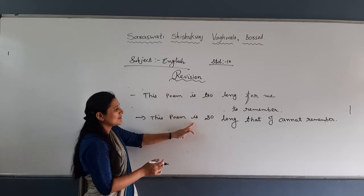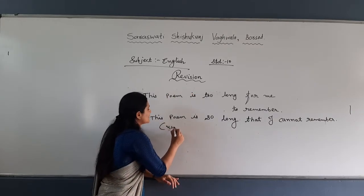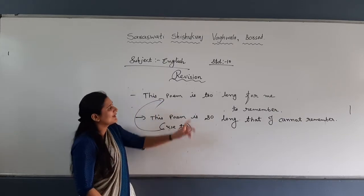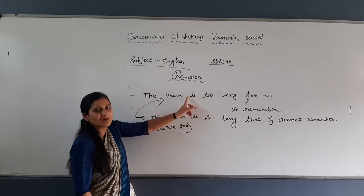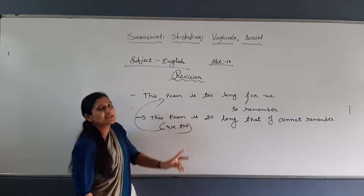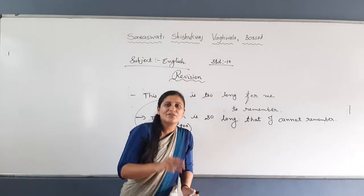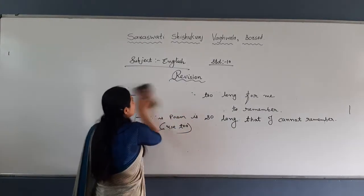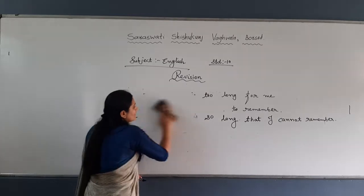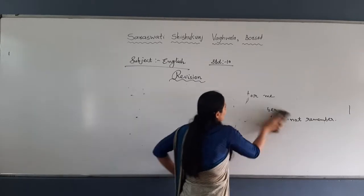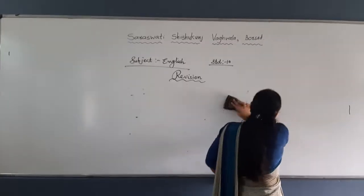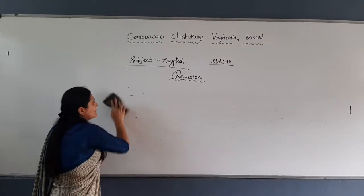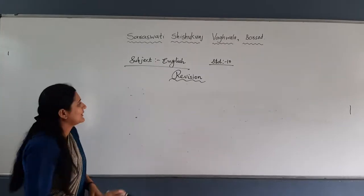So if this question is given and it says 'use TOO,' the 'so that' form is already given and you convert it into the TOO form. If 'remove TOO' is given, you convert it into the 'so that' form. It's very easy. Next topic: Affirmative, Negative, Exclamatory, and Imperative — we will cover all within one example.